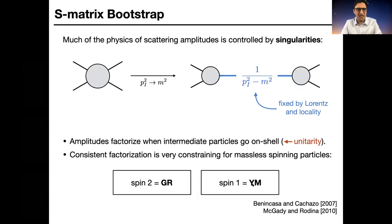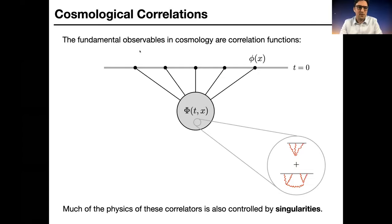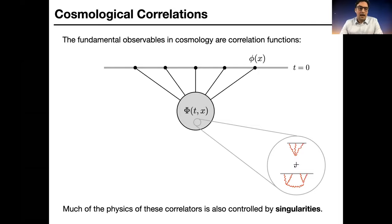The fundamental observables in cosmology are correlation functions of bulk fields Φ projected to boundary values φ. There's a Feynman-diagram-like expansion of interactions in the bulk spacetime that can be projected onto the boundary, but like scattering amplitudes, that expansion quickly becomes complicated and may not be the best way to describe the physics. A lot of the physics of these correlators is also controlled by singularities, which are slightly different in cosmology than in flat-space scattering amplitudes.